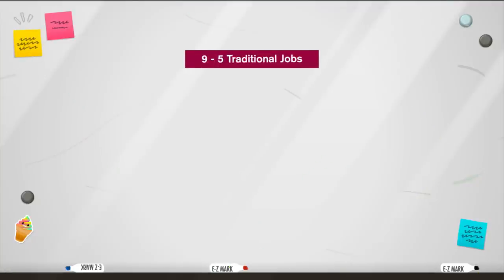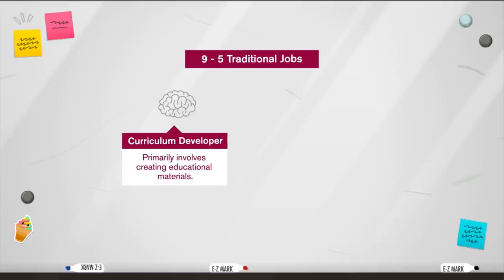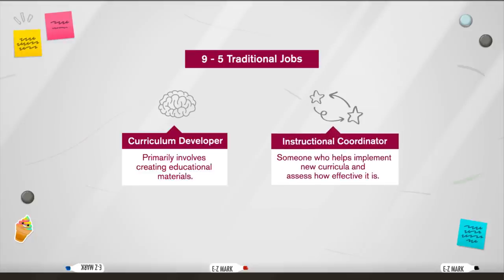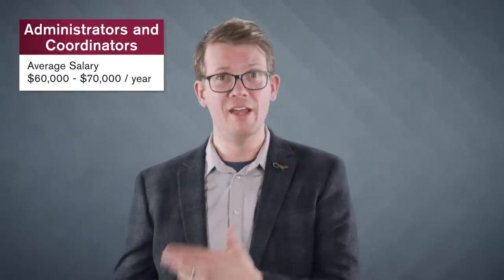If you prefer a more traditional 9-to-5 job, you could put your education degree towards a career as a curriculum developer, which primarily involves creating educational materials, or an instructional coordinator, which is someone who helps implement new curricula and assess how effective it is. But it might also include advising teachers or district administrators, or working with local businesses, nonprofits, or arts organizations, such as museums. Instructional coordinators might also be responsible for devising teacher training programs. And salaries can vary widely, but generally run between $60,000 to $70,000 a year.